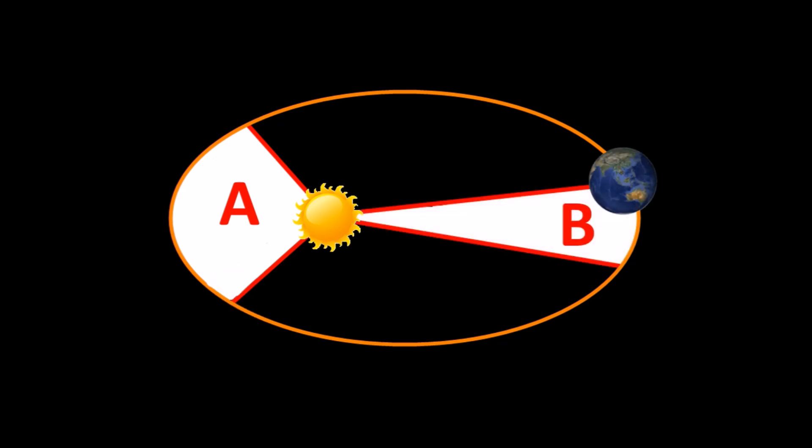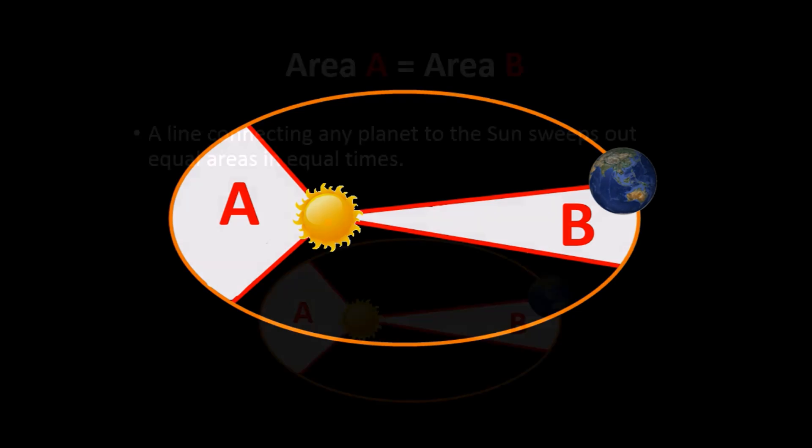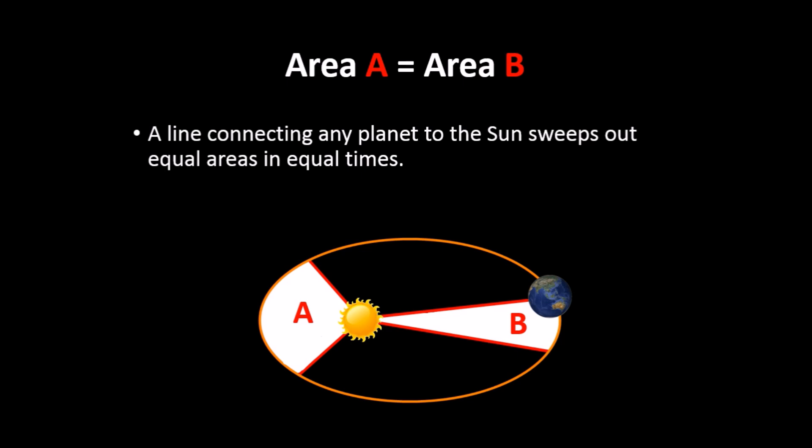Then we skip ahead to a different month and a different season. The speed of the Earth is slower, and it is further away from the sun. We find that the line between them sweeps out this area, B. What Kepler said is that areas A and B are exactly equal. They are the same area.